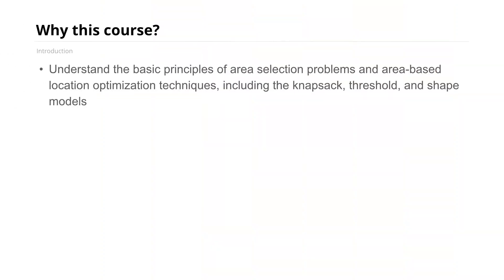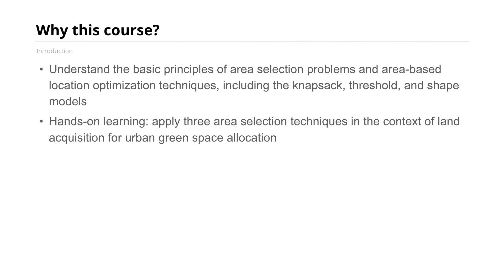By the end of this course you'll understand the three primary types of area selection optimization models, and be able to apply each of these to an example of parcel selection for a community gardens project. Let's get started.